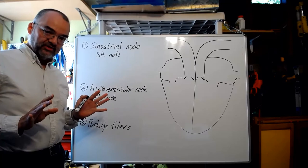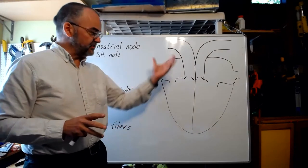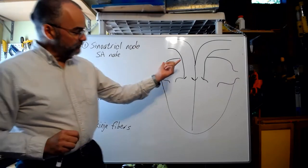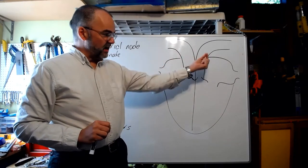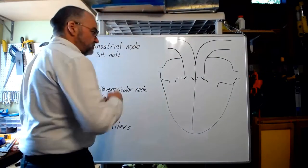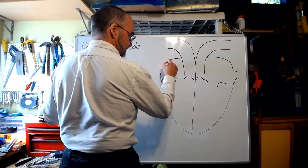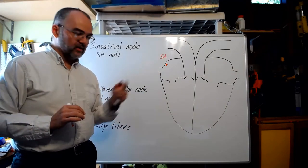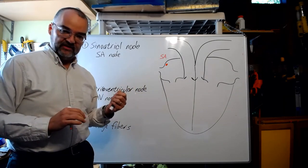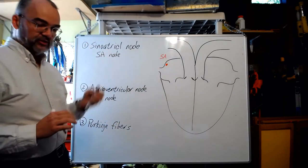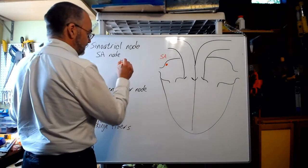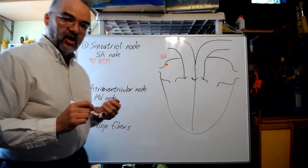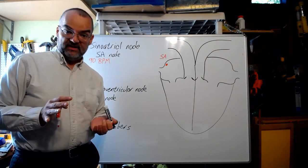To make contraction start in the atria and go top-down, it makes sense to have the first auto-rhythmic tissue higher up in the atria. The sinoatrial node is located in the upper part of the right atrium, close to where the superior and inferior vena cavae join. On its own, the SA node fires about once every two-thirds of a second — a native rate of about 90 beats per minute.